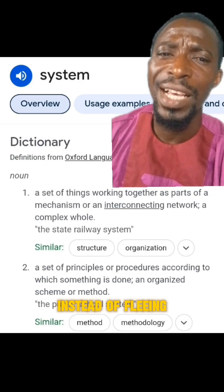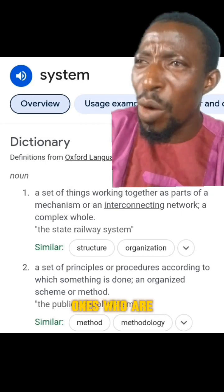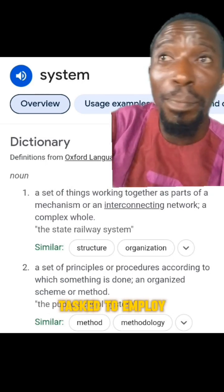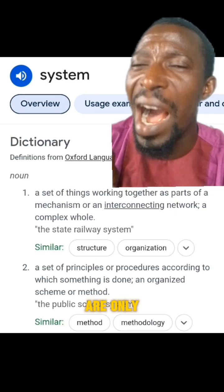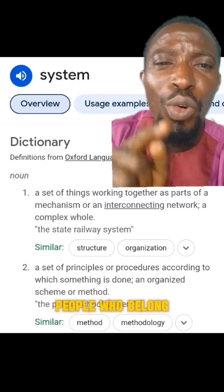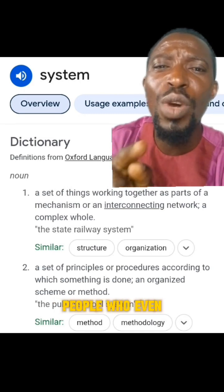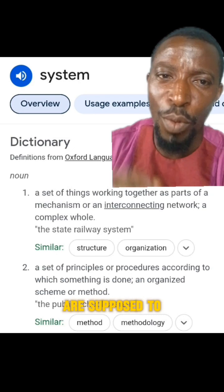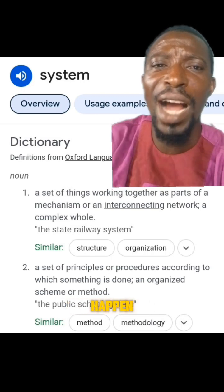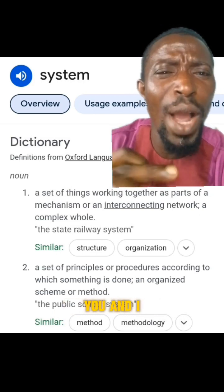So instead of fleeing from the system, instead of running away from the system — the system is you and I. We are the ones implementing these systems that we are running away from. You have been tasked to employ someone and you are only interested in employing people who worship like you, people who speak like you, who belong to the same religion, the same ethnicity, even the same denomination. You are supposed to see to it that someone is promoted but you hold on to it and refuse to let that happen because of your own selfishness. It is not any system anywhere — it is what you and I are doing.